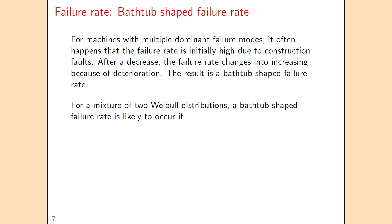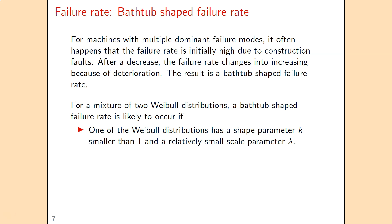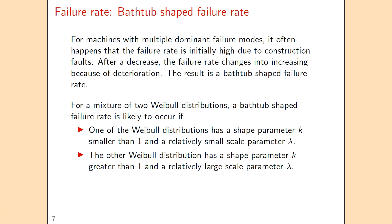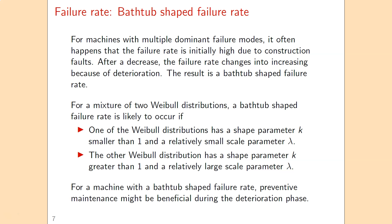If you have a mixture of two Weibull distributions, you can observe a bathtub-shaped pattern. This occurs if one of the two Weibull distributions has a relatively low scale parameter lambda with a shape parameter k below 1, and the second Weibull distribution has a relatively large scale parameter lambda with a shape parameter k greater than 1. In this case, preventive maintenance will be beneficial during the deterioration phase when the failure rate is going up again.